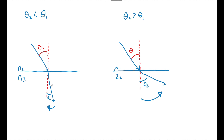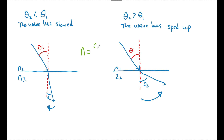If theta2 is less than theta1 and the ray bent towards the normal, that means the wave has slowed down. Using n = c/v, if v slows down, n went up — so n2 is greater than n1. If the ray bent away and the wave sped up, then n2 is less than n1. Without doing any math, bending towards the normal means the wave slowed down and n2 is greater than n1.